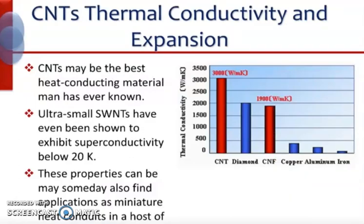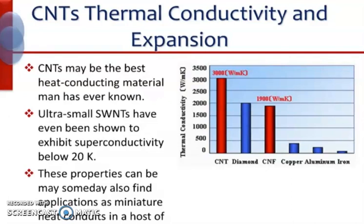Carbon nanotubes may be the best heat-conducting material ever made. Ultra-small single-wall carbon nanotubes have been shown to exhibit superconductivity below 20 Kelvin. Several studies suggest that these materials, already heralded for their unparalleled strength and unique ability to adopt the electrical properties of either semiconductors or perfect metals, may someday also find applications in miniaturized heat conductors.